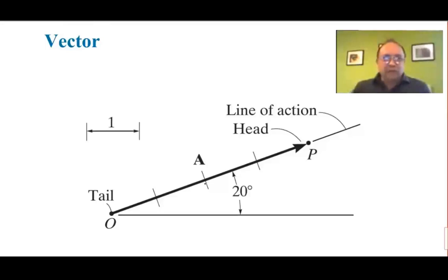We're going to talk about vectors. You probably have some idea what a vector is already, but let's review very quickly. This is a vector. If somebody asks me what is a vector, I say as an answer: a vector is an arrow. That's what a vector is — an arrow.